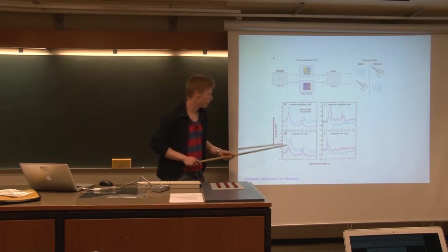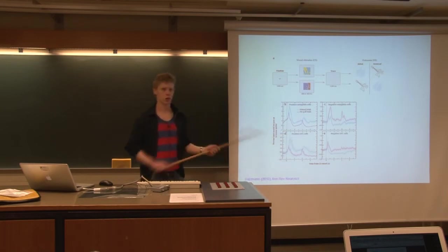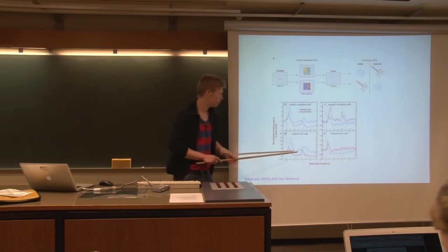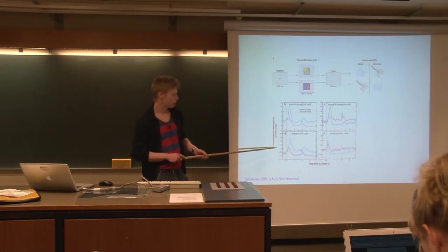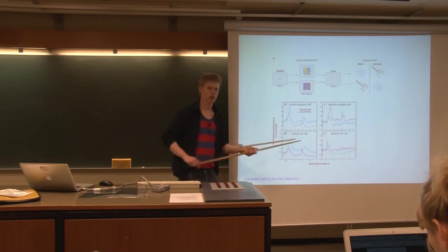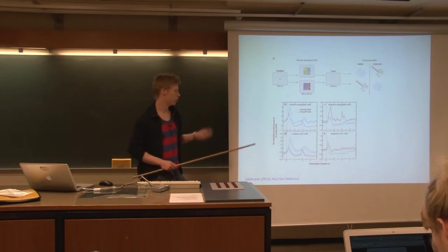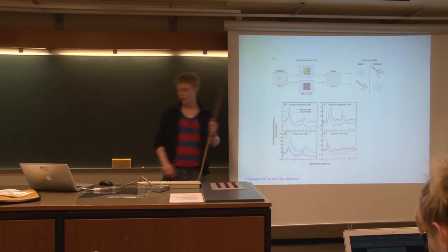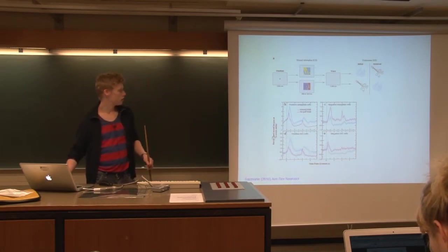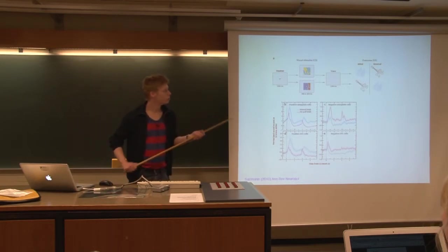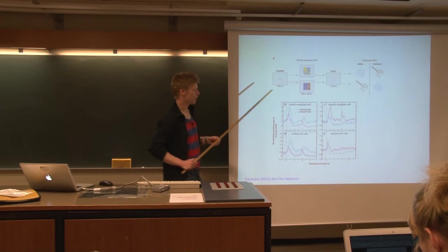A similar thing you can see in the orbital frontal cortex, this part of the frontal lobe that's connected highly to the amygdala. You can see similar signs that some of the cells in the orbital frontal cortex code for the positive signals, whereas others code for the negative signals. There is this coding of these signals in both regions, both positive and negative.